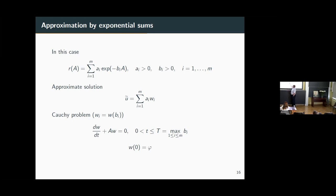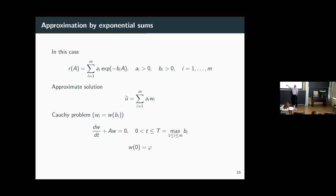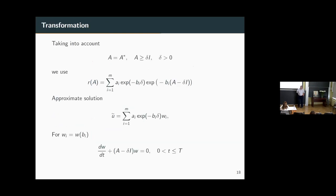We have the possibility for such type of approximation. I will not discuss how to construct such approximations — that is a special numerical problem. For rational approximation we have numerical methods and sufficient open software. For exponential sums the situation is not as well developed. Such type of approximation gives a similar additive representation, where the additional function is the solution to an additional Cauchy problem with standard operator A at a special time moment.